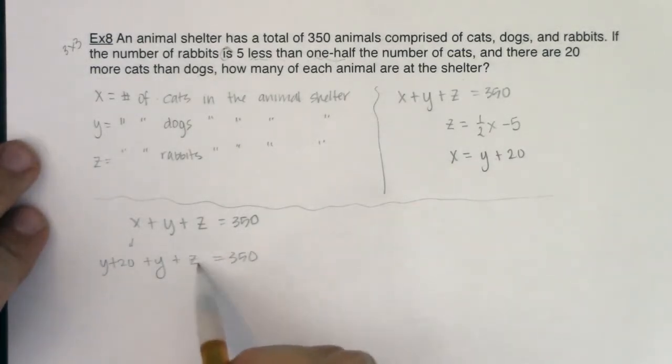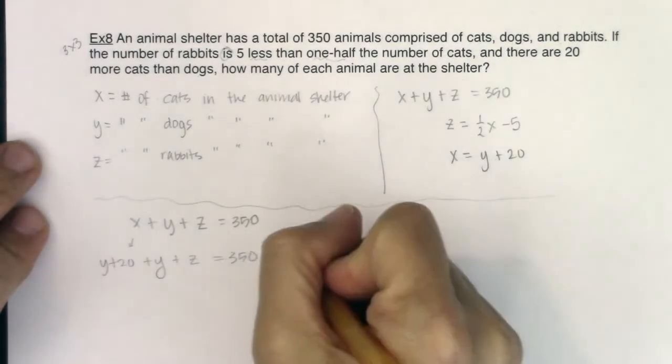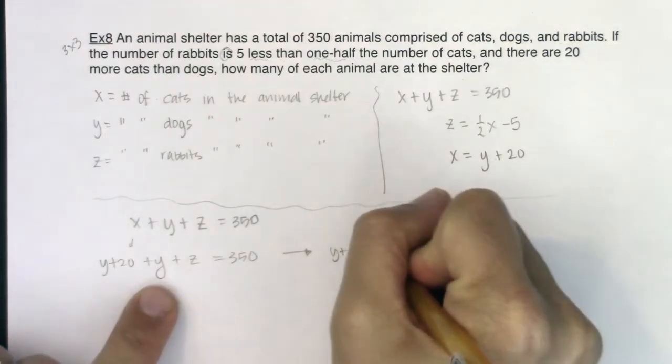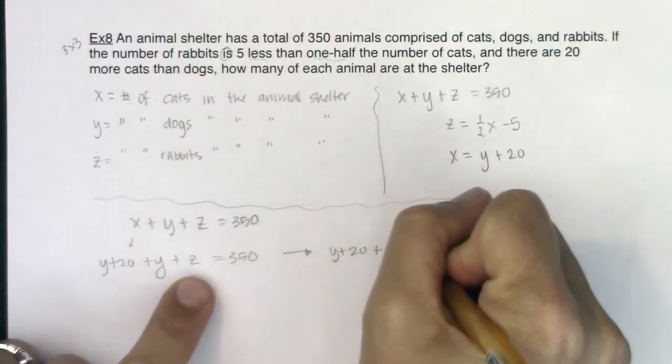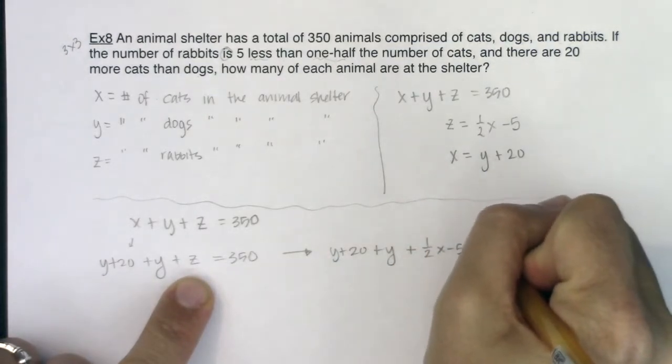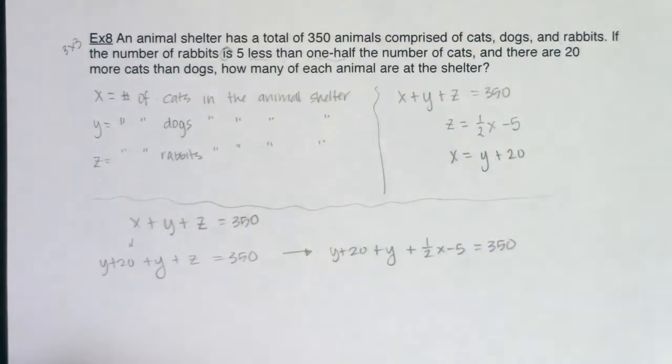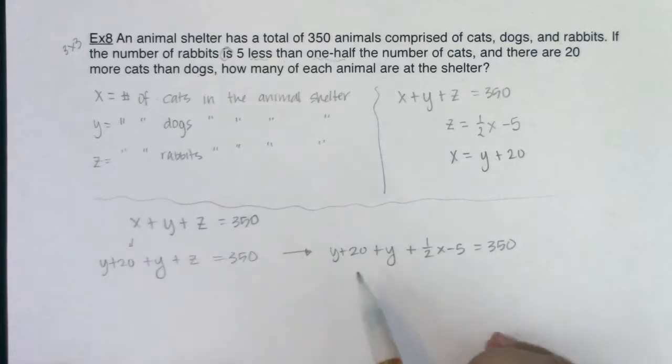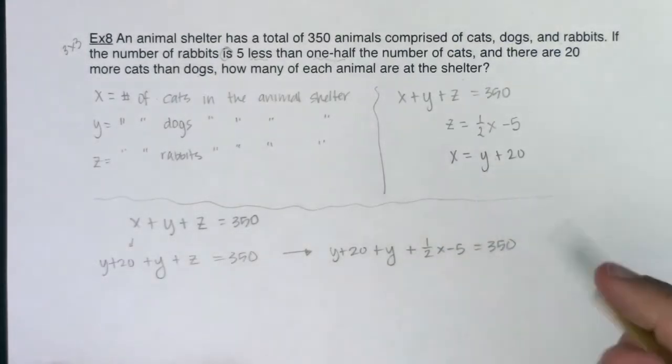Let's see if we can keep boggling this down. Can I get this to go away? What do I know about z? I know z is one-half x minus five. So I'll keep my y plus 20, I'll keep my y, but instead of z, I'm going to write one-half x minus five. Now I still have two variables—I had y and z, and now I have y and x. I haven't gotten it to where I need to be. I still need to get rid of one of these variables.